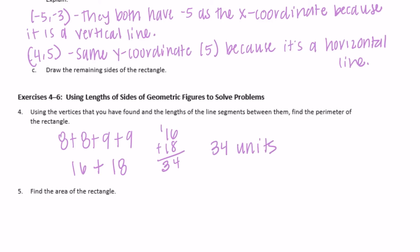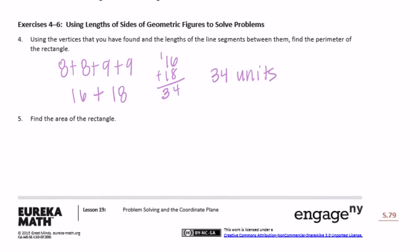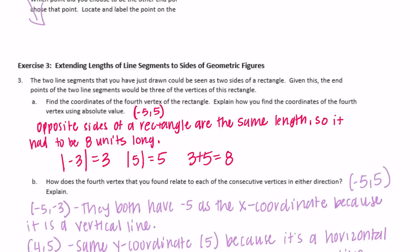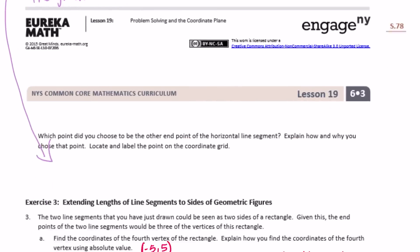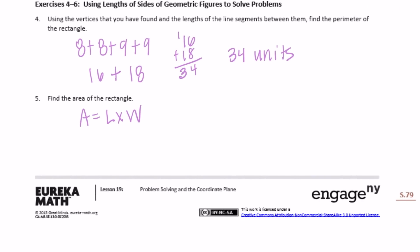Find the area of the rectangle. Area equals length times width. If our length is 9 and our width is 8, then 8 times 9 equals 72. And remember, we say 72 square units, or units squared.